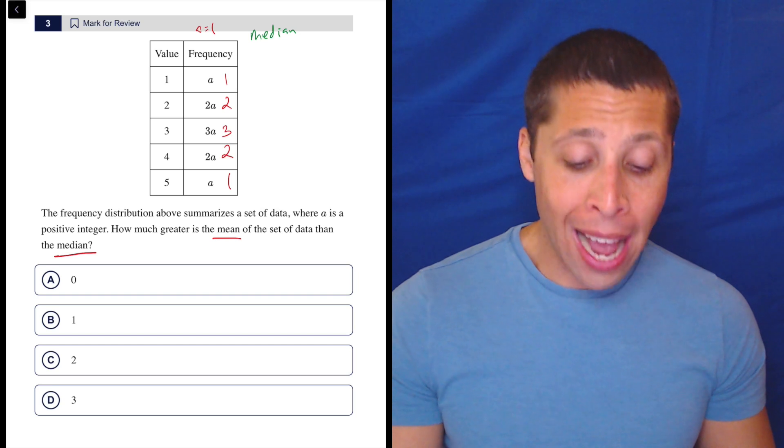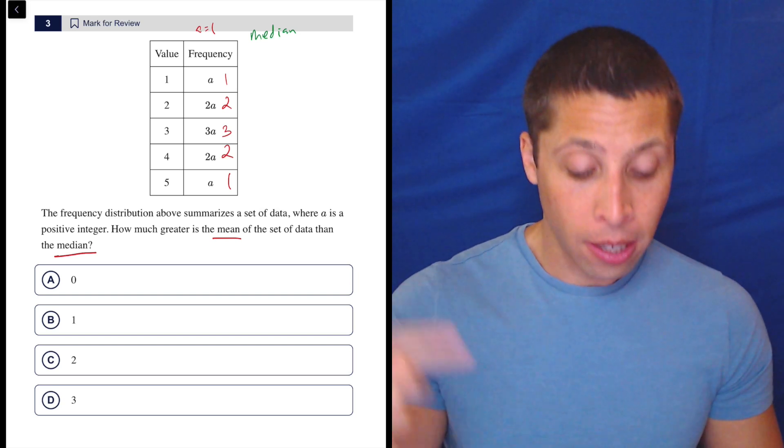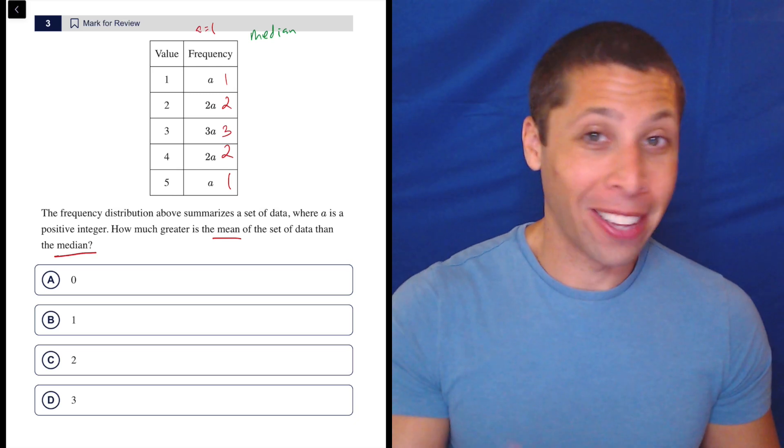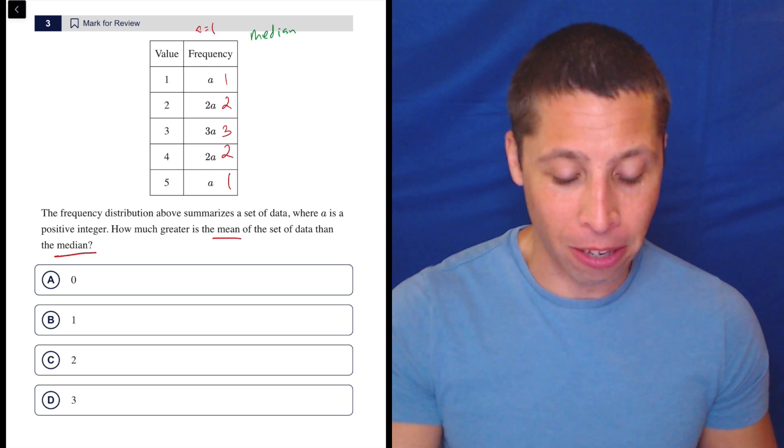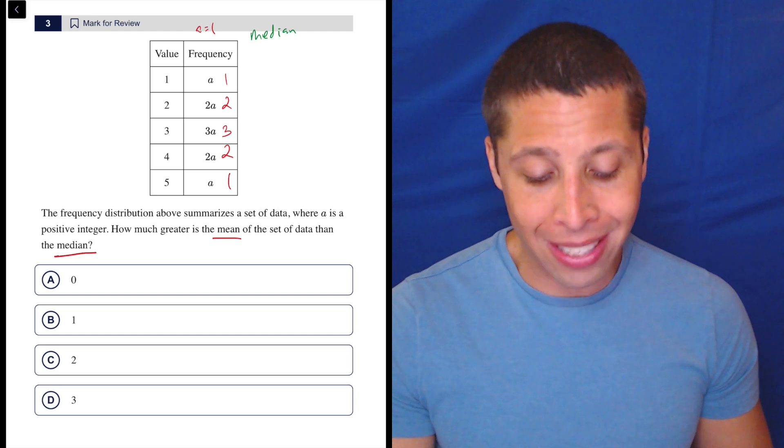So I don't want to write out my entire list of numbers like 1, 2, 2, 3, 3, 3, 4, 4, 5. I don't want to do that. I could. It's not that hard. It's not that long of a list. But there will be ones where there are much more complicated lists. So what I like to do is tally marks.